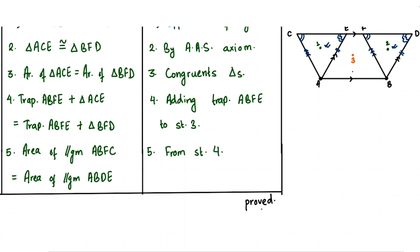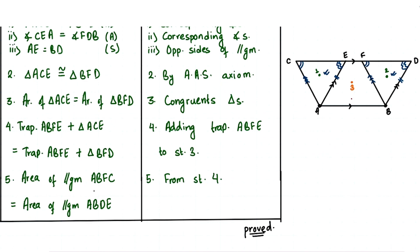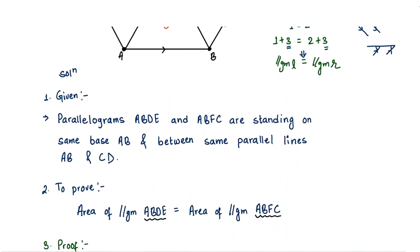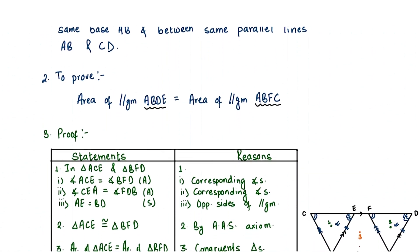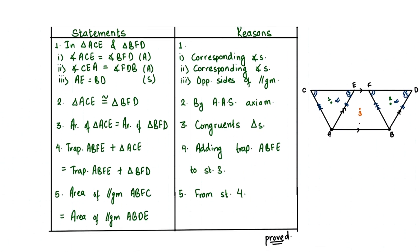We have proved our theorem. We needed to prove that ABFC equals ABDE, and that is exactly what we have shown — ABFC is equal to ABDE. So we have proved that if parallelograms are standing on the same base and between the same parallel lines, then their areas are equal. The steps are: write the given things from the figure, write what you need to prove, then write the proof. If you enjoyed our video, please give us a thumbs up and subscribe to our channel for more FisherMaths videos. Thank you.